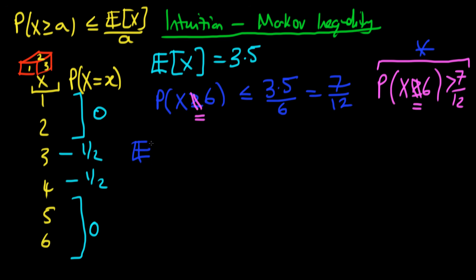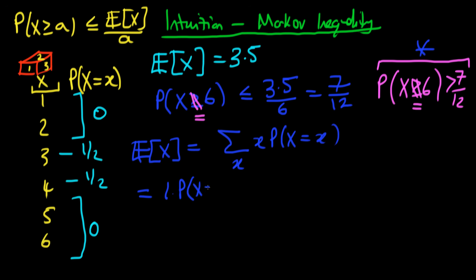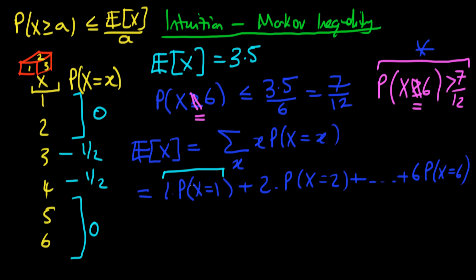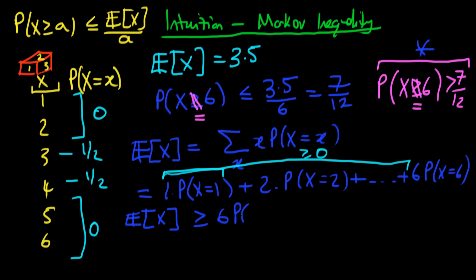We need a formula for the expected value of a discrete random variable. From previous videos, that's just a sum over all X values of X times the probability that X equals x. For the case of a die, this is 1 times P(X=1) plus 2 times P(X=2), all the way through to 6 times P(X=6). Each of these probabilities has to be greater than or equal to 0 by definition. So summing all terms not including the 6 term, we know that is greater than or equal to 0. Therefore the expected value of X has got to be greater than or equal to 6 times the probability that X equals 6.